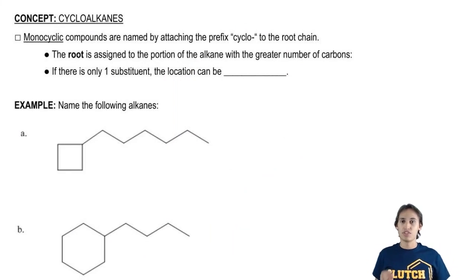Cycloalkanes are the name given any time you have a ring inside of your alkane. We're going to start off with the easy ones, which is just monocyclic compounds. Monocyclic just means one ring, and these are easy.